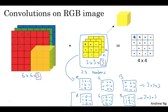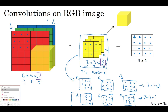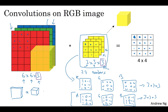By convention in computer vision, when you have an input with a certain height, width, and number of channels, your filter will have a potentially different height and width, but the same number of channels. In theory, it's possible to have a filter that looks at only the red channel, or only the green and blue channels. Convolving a 6 by 6 by 3 volume with a 3 by 3 by 3 filter gives a 4 by 4 — a 2D output.